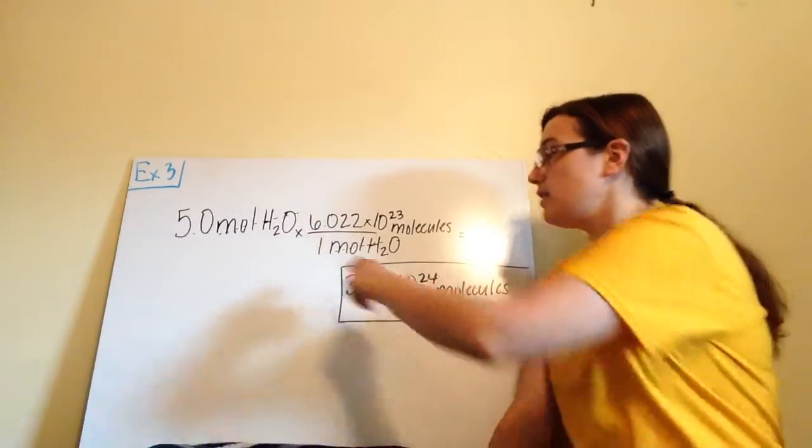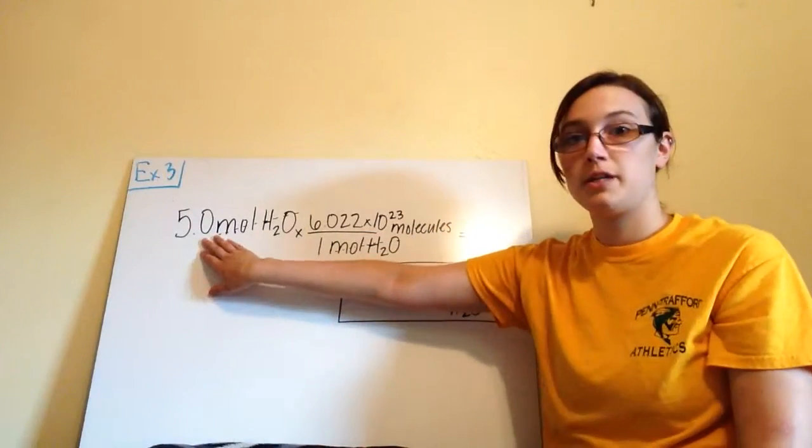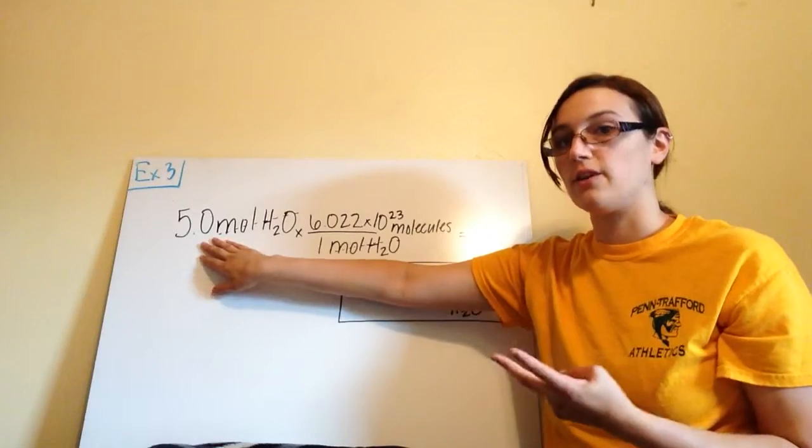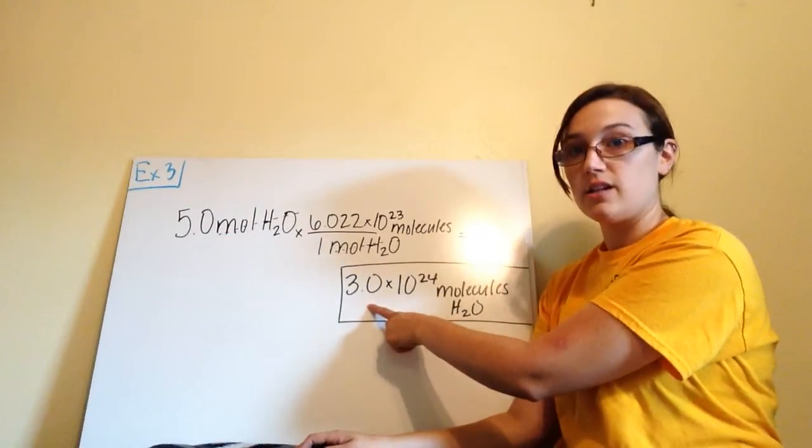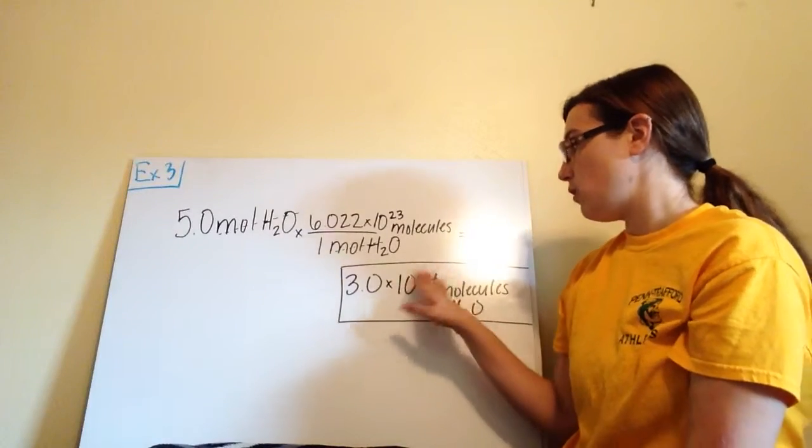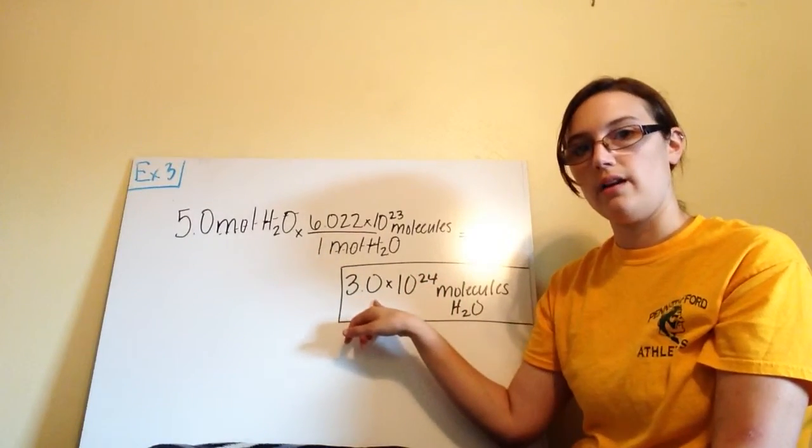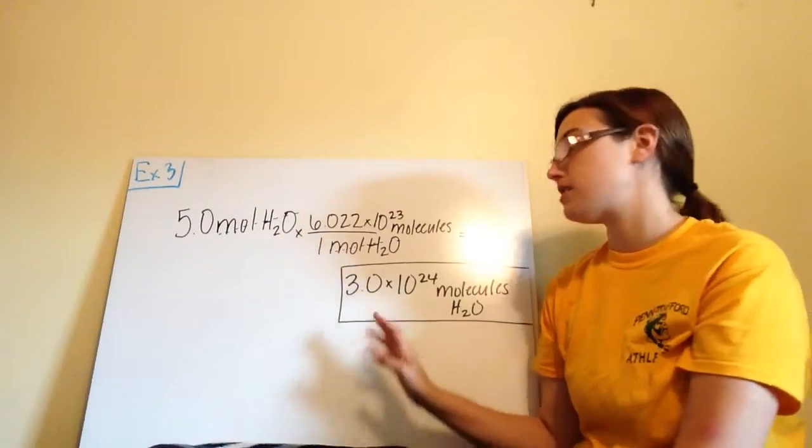However, look at our given piece of information. Our given piece of information is 5.0. That's two significant figures. That means my answer also needs to be two significant figures. Remember, we don't include the exponents or anything. All we look at is the number in front. A 3.0, that's two sig figs.